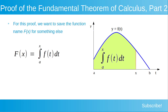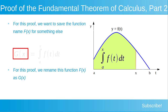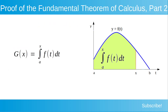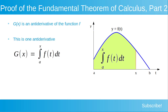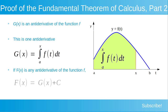For this proof, we want to save the function name capital F for something else, so we rename this function capital F(x) as capital G. Capital G is an antiderivative of the function f — this is one antiderivative. If capital F is any antiderivative of the function f, then capital F is equal to capital G plus a constant c.